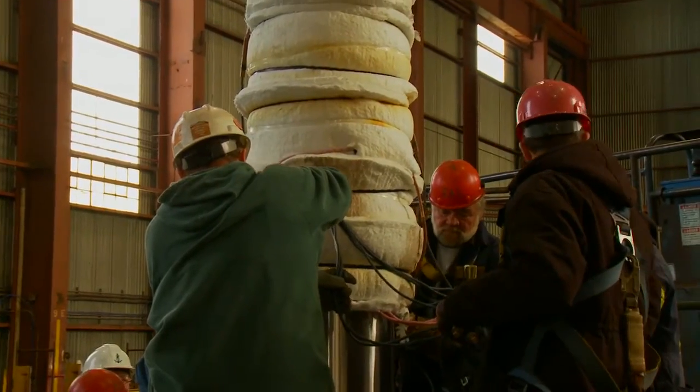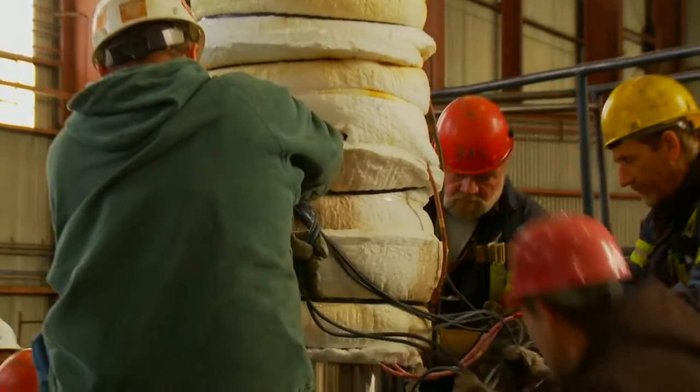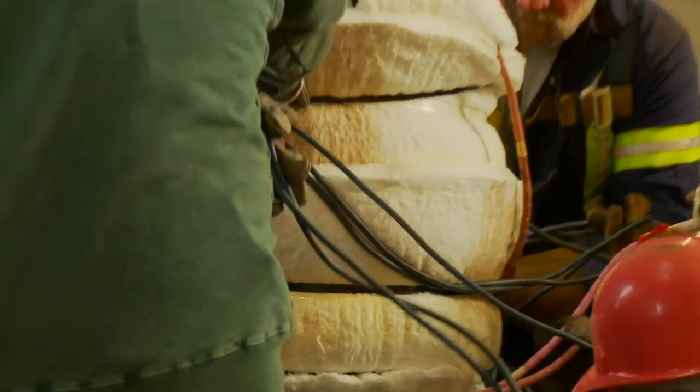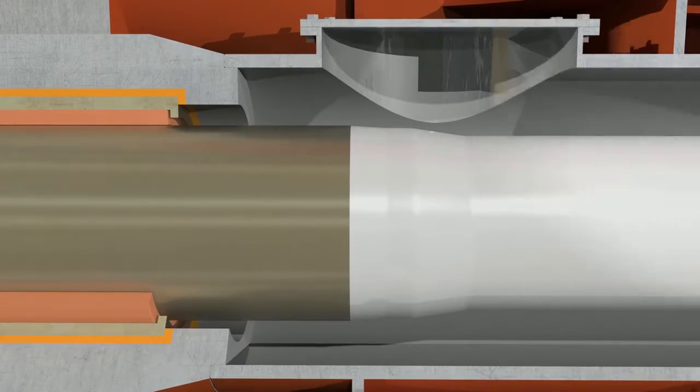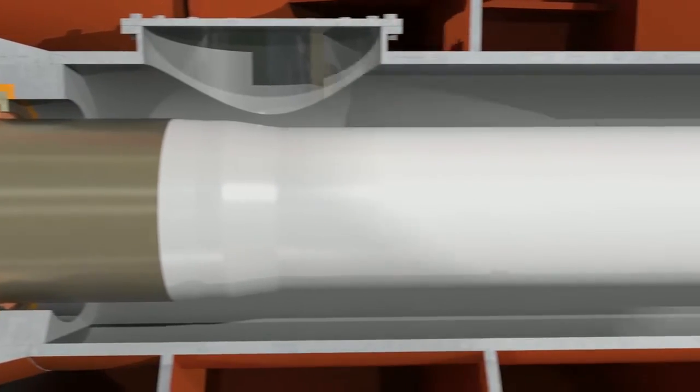Shaft liners usually made of gunmetal or bronze are shrunk on the shaft in way of the bearings. Alternately, welded coatings may be applied. Between the liners a corrosion protection coating is used.